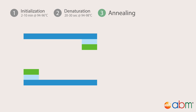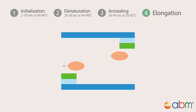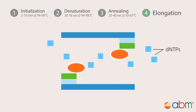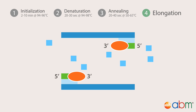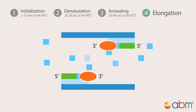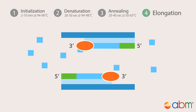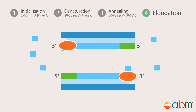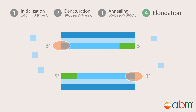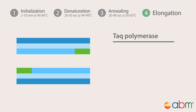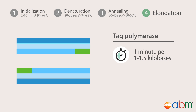After the primers establish a starting point for the enzyme, DNA polymerase starts to incorporate deoxynucleotide triphosphates in a 5' to 3' direction to synthesize a new DNA strand. The temperature and extension time for this elongation step depends on the type of DNA polymerase enzyme and the target amplicon. Commonly used Taq polymerase polymerizes at a speed of 1 to 1.5 kilobases per minute and works ideally at 72 to 78 degrees Celsius.